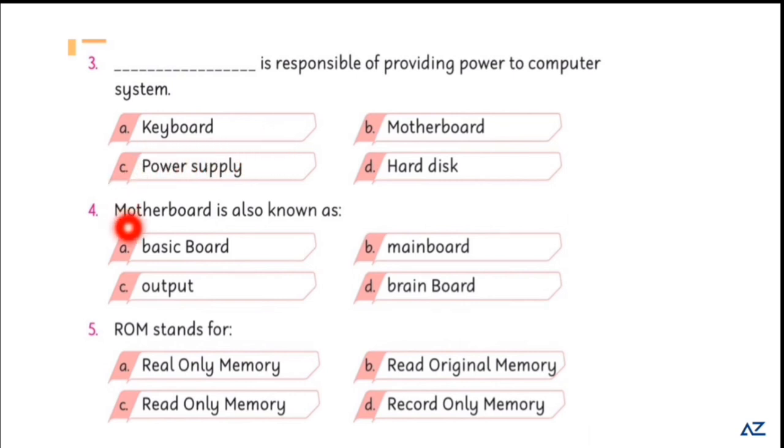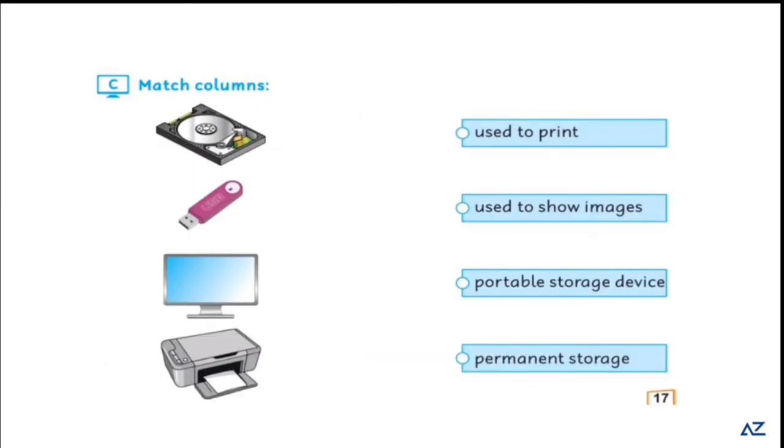Motherboard is also known as main board of a computer. ROM stands for read only memory. Match columns. Printer is used to print. Monitor used to show images. Portable storage device is USB and permanent storage device is hard disk.